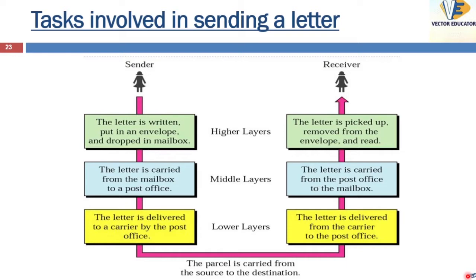For example, if you are writing a letter to your friend, what will be the tasks involved? There is a sender — the person who writes the letter — and he wants to write to a receiver. The sender first writes the letter, puts it in an envelope, and drops it in a mailbox. The letter is then carried from the mailbox to the post office and delivered to a carrier. From there, the letter is carried to the individual's mailbox and then picked up, removed from the envelope, and read by the receiver.